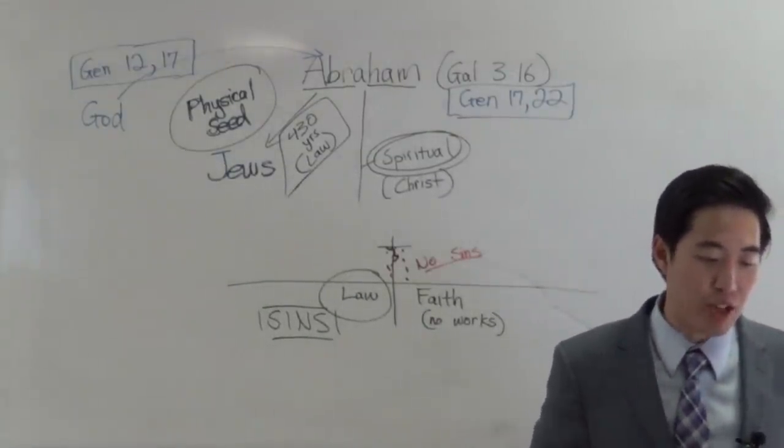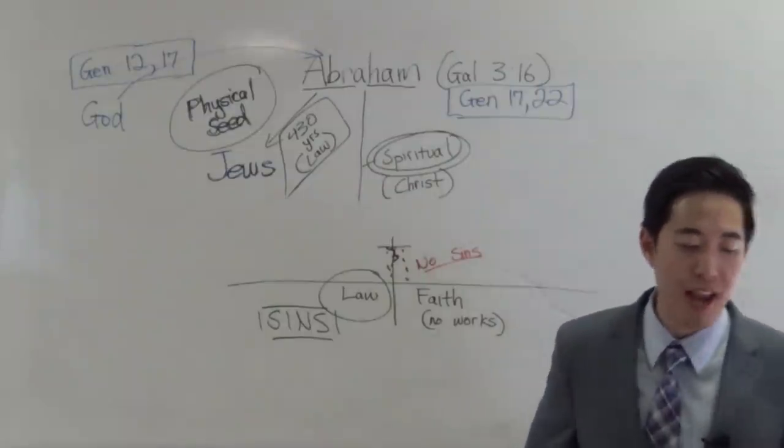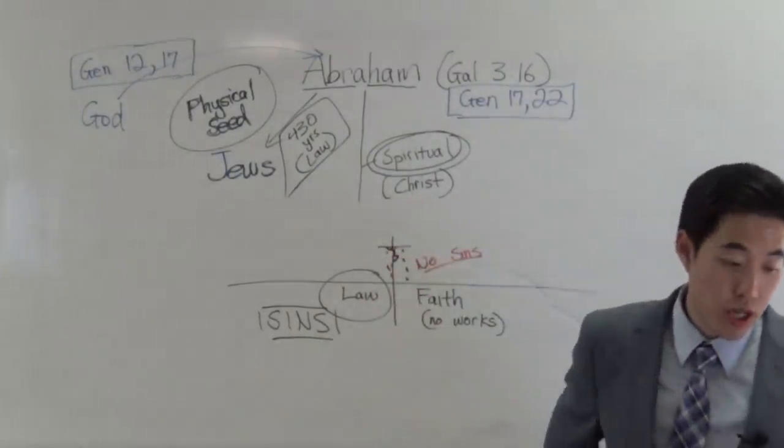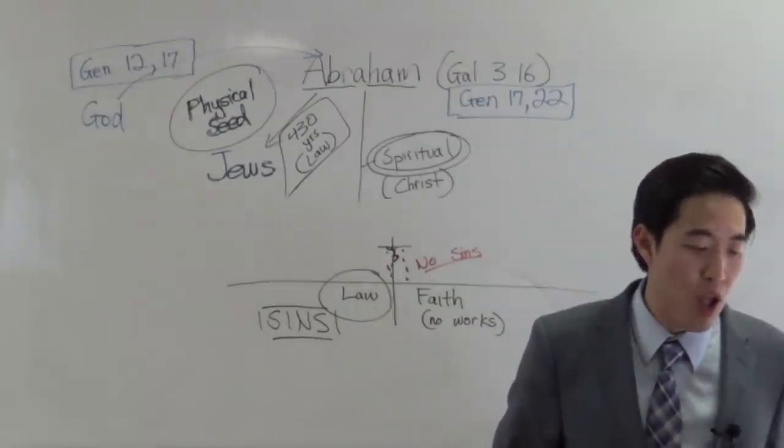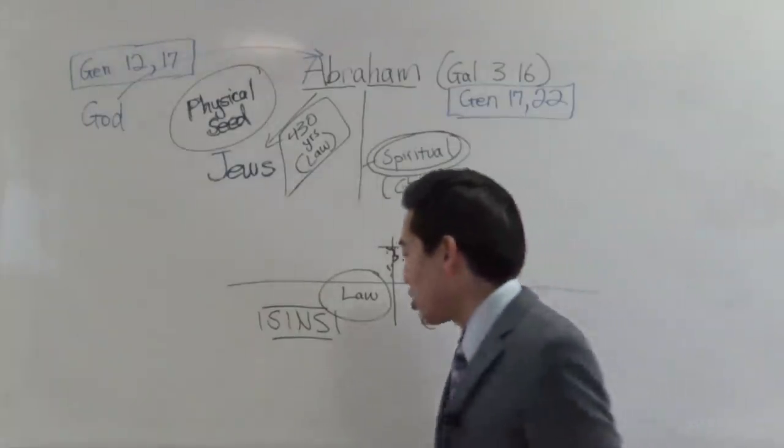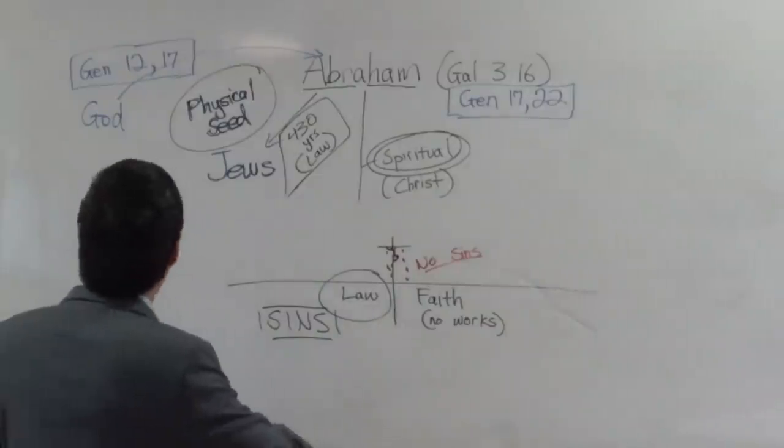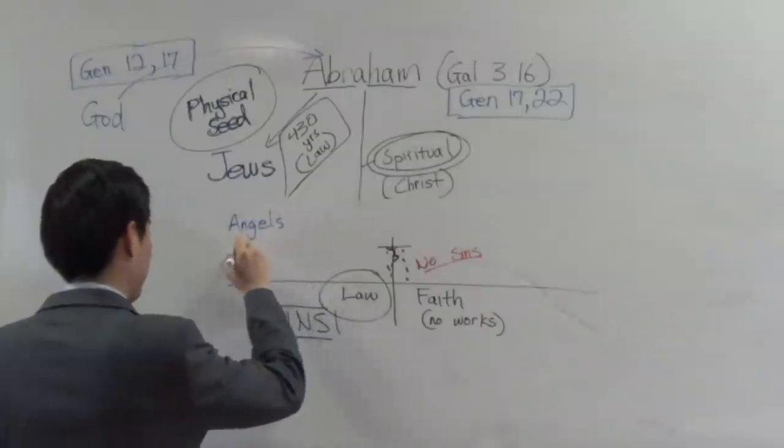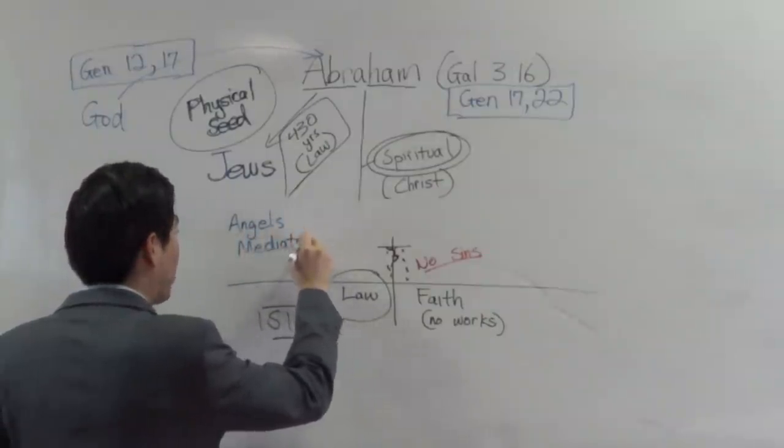Now let's keep reading right here. It was added because of transgressions till the seed should come to whom the promise was made. So God made that promise about the seed. Remember, who is the seed? Jesus Christ, right? So until that seed should come. And it was ordained by who? Angels. So angels ordained it in the hand of a mediator. So this law was handed down by angels, and there was a mediator. Who is that? It's referring actually to Moses.